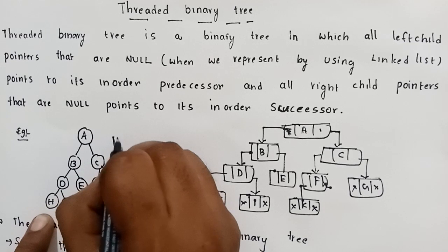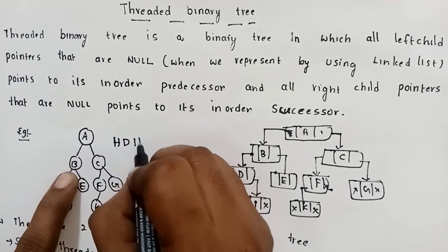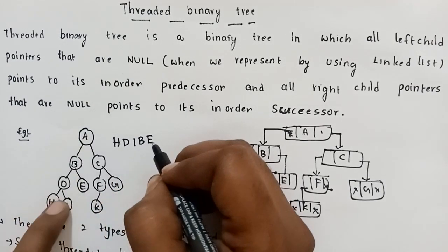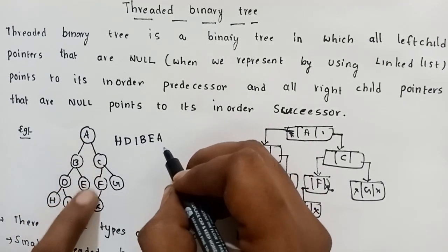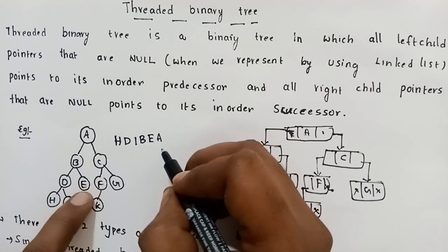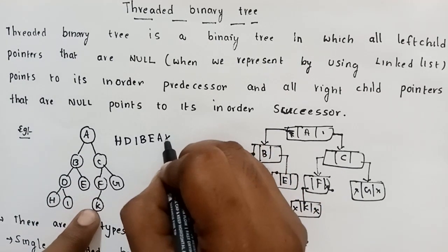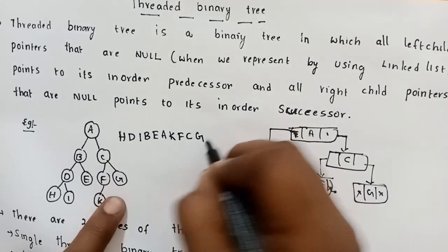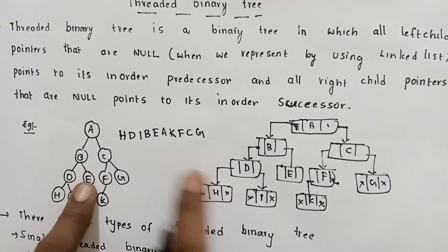The in-order traversal goes: H, then root D, then right. Each left child is visited before root, then right. Root A is visited after its left subtree. Then C, then F, then K. So the in-order traversal sequence for the given binary tree is: H, D, I, B, K, A, F, C, G.